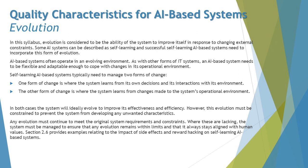On the other hand, the second form of change — learning from changes made to the operational environment — occurs when you upgrade things like the operating system or pass an external change to a particular system. For example, an AI-based system that was eligible to identify only cats is upgraded with more features and becomes capable of identifying dogs as well. In both cases, the system will ideally evolve to improve its effectiveness and efficiency.